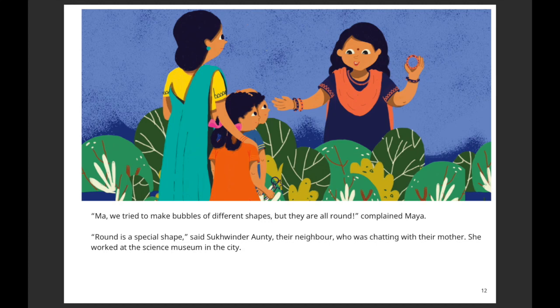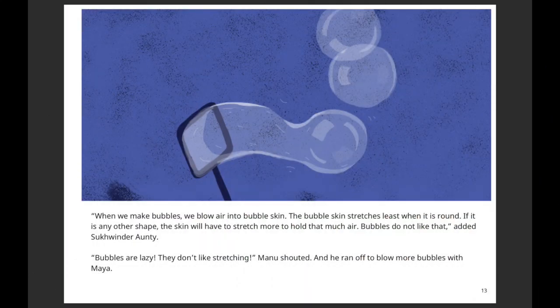'How strange! Isn't it, Maa — we tried to make bubbles of different shapes but they're all round,' complained Maya. 'Round is a special shape,' said Sukhvinder Auntie, their neighbor who was chatting with their mother. She worked at the science museum and explained: 'When you make bubbles, you blow air into the bubble skin, and the bubble skin stretches the least when it is round. If it were any other shape, the skin would have to stretch more to hold that much air.'